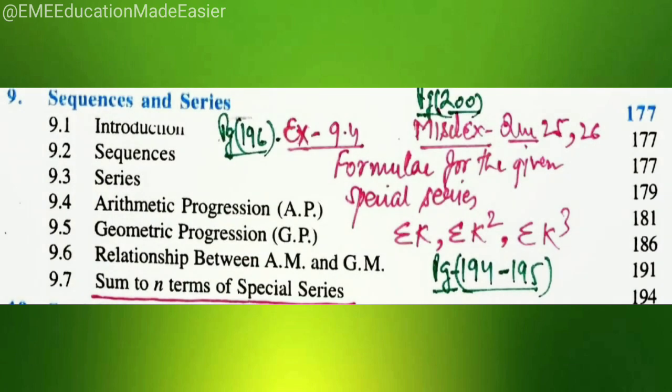Chapter number 9, sequence and series, sum to N terms of special series. That is formula for the given special series. Sigma K, Sigma K square, Sigma K cube on page 194 to 195 have been deleted. And related to this, we have exercise 9.4 on page number 196 and miscellaneous exercise page number 200. We have question number 25 and 26 from miscellaneous exercise. All that have been deleted from this chapter.